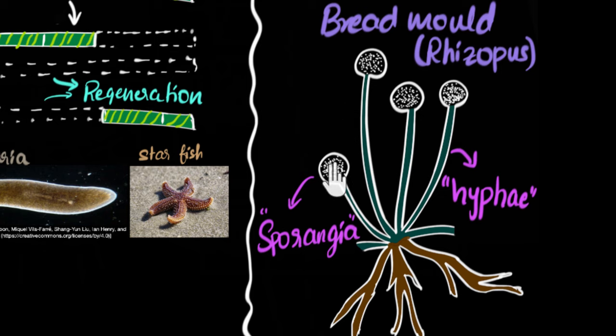They have very thick walls to protect them. And so when this bread mold matures, this sporangia will just release those spores into the air. And then when the spores find a moist surface, the bread needs, this mold, this fungus needs a moist surface to grow. So when these spores find a moist surface, they will regrow, they will grow into new bread molds.